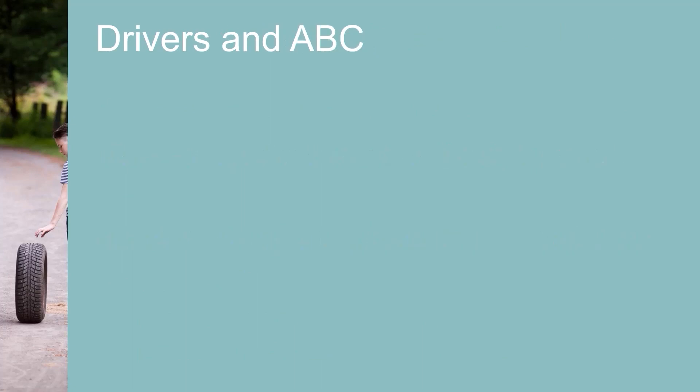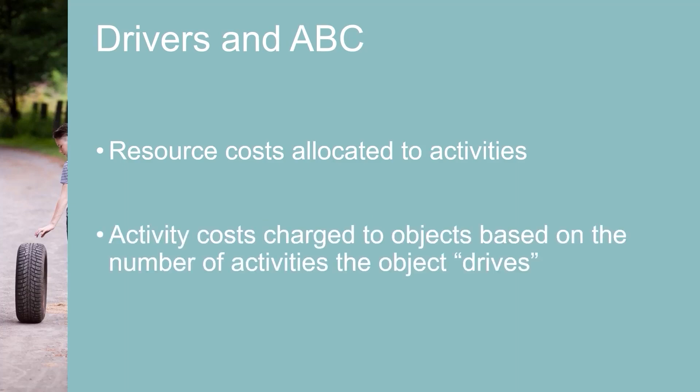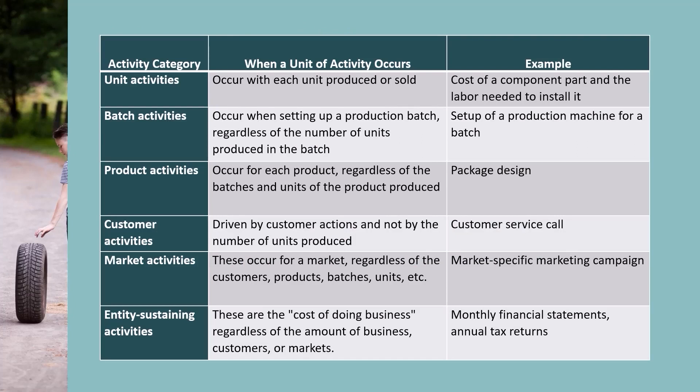Accounting types may see a strong resemblance between my definition of drivers and activity cost drivers in activity-based costing. In activity-based costing, resource costs are first allocated to activities, and activity costs are charged to objects based on the number of activities the object drives or causes. Activities can occur at different levels of a company. For example, unit activities occur with each unit produced or sold — an example would be the cost of a component part and the labor needed to install it. Product activities occur for each product regardless of the batches and units produced; an example of that is product design.